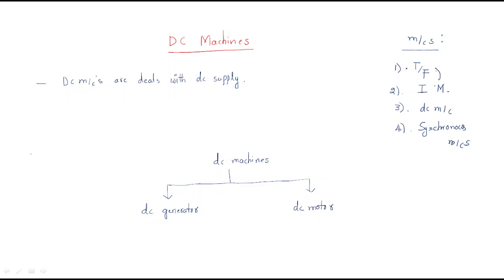Among these machines, there are similar characteristics between the transformer and induction machines, and similarly between DC machines and synchronous machines. So after completing DC machines, we will discuss synchronous machines. The recommended order is: transformers first, then induction machines, as it is easier to analyze them in that sequence.